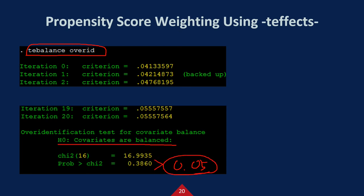Here, fortunately, the p-value is over 0.05. And we can conclude that covariates are balanced.